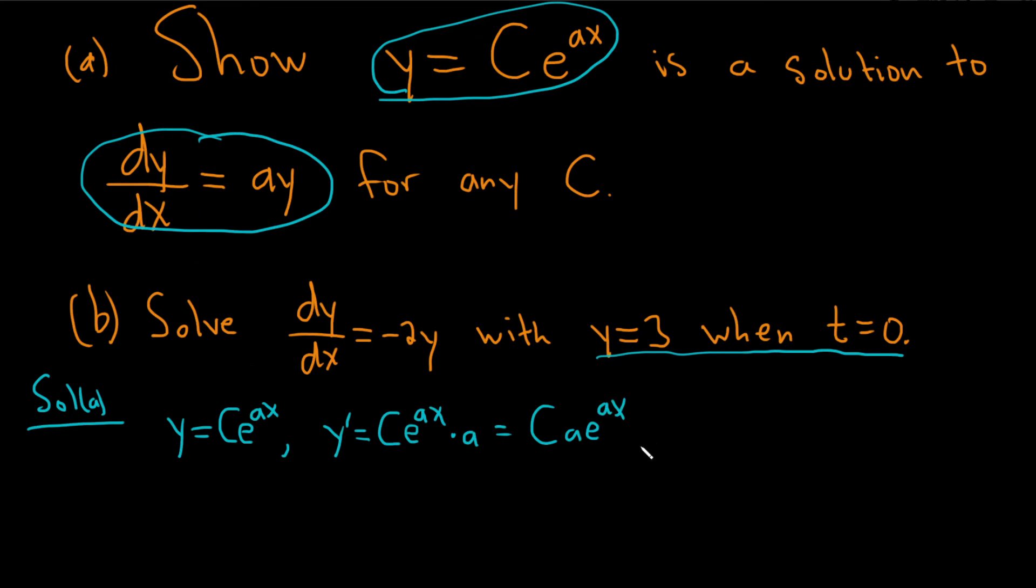So now let's plug into the DE. Plug it into the differential equation. Use a different color to indicate that we're doing that. So we have dy dx, that's the left-hand side. That's dy dx, dy dx is y prime. So c a, e to the ax. And we have to show that that is equal to a times y. In fact, I'm going to put the dy dx here, just to make it really clear.